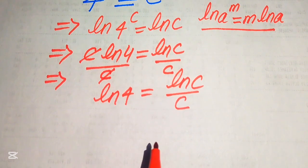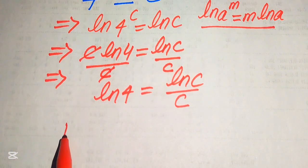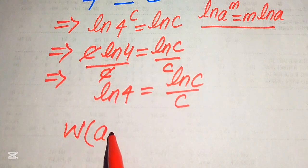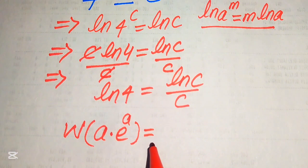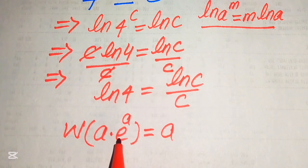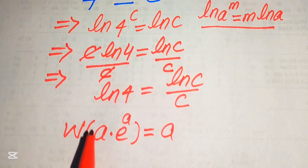Now we need to solve this problem with the help of the Lambert W function. The Lambert W function is defined as: if you have W of (a times e to the power of a), it equals a. This means that if you have a multiplied by the exponential function where the exponent is also a, the output of this function equals a only.